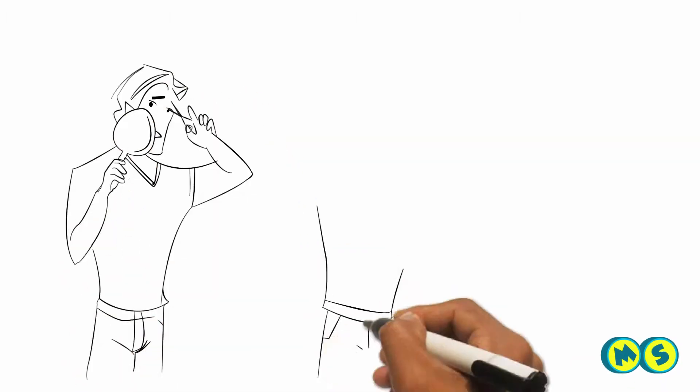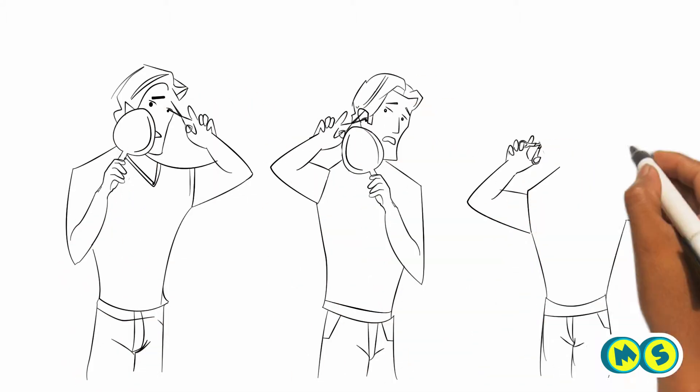James wants to trim hair from his nose and ear, but he finds it too difficult to do even after using several mirrors.